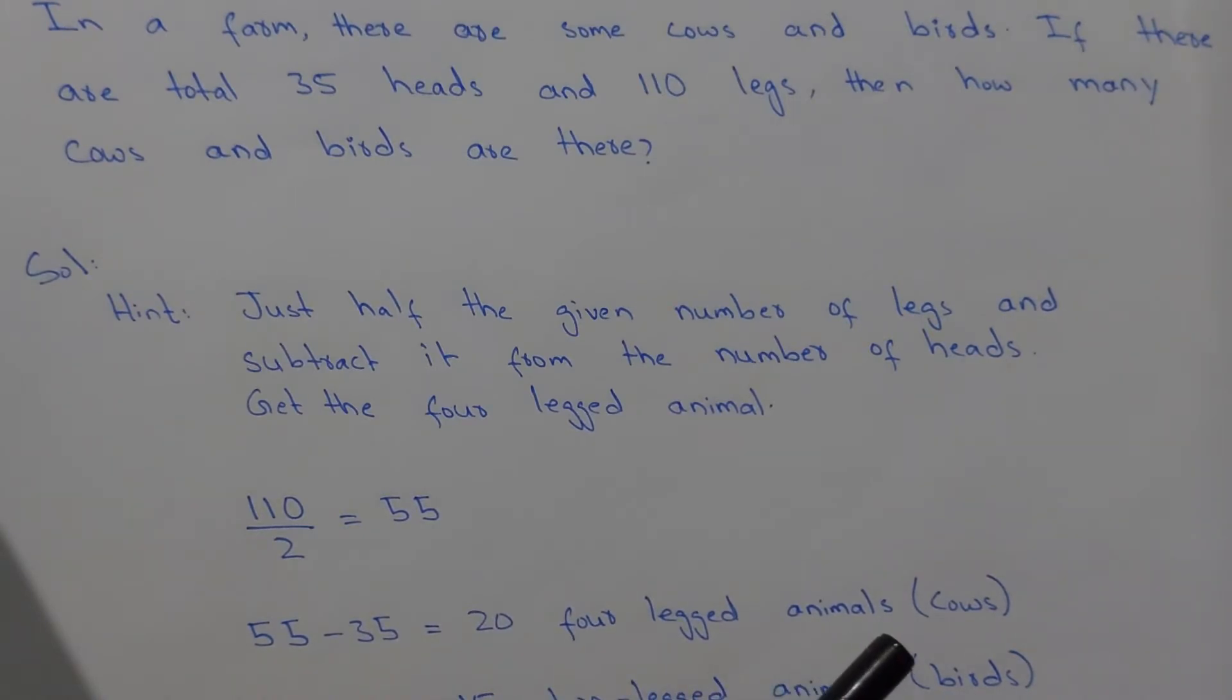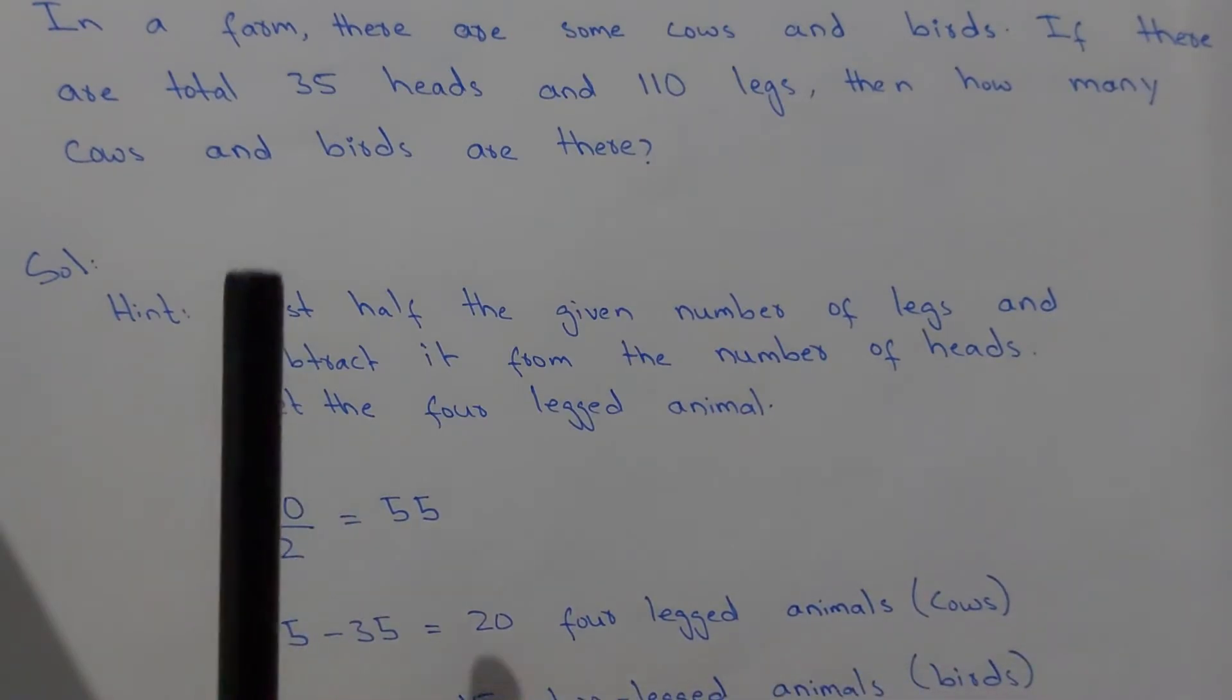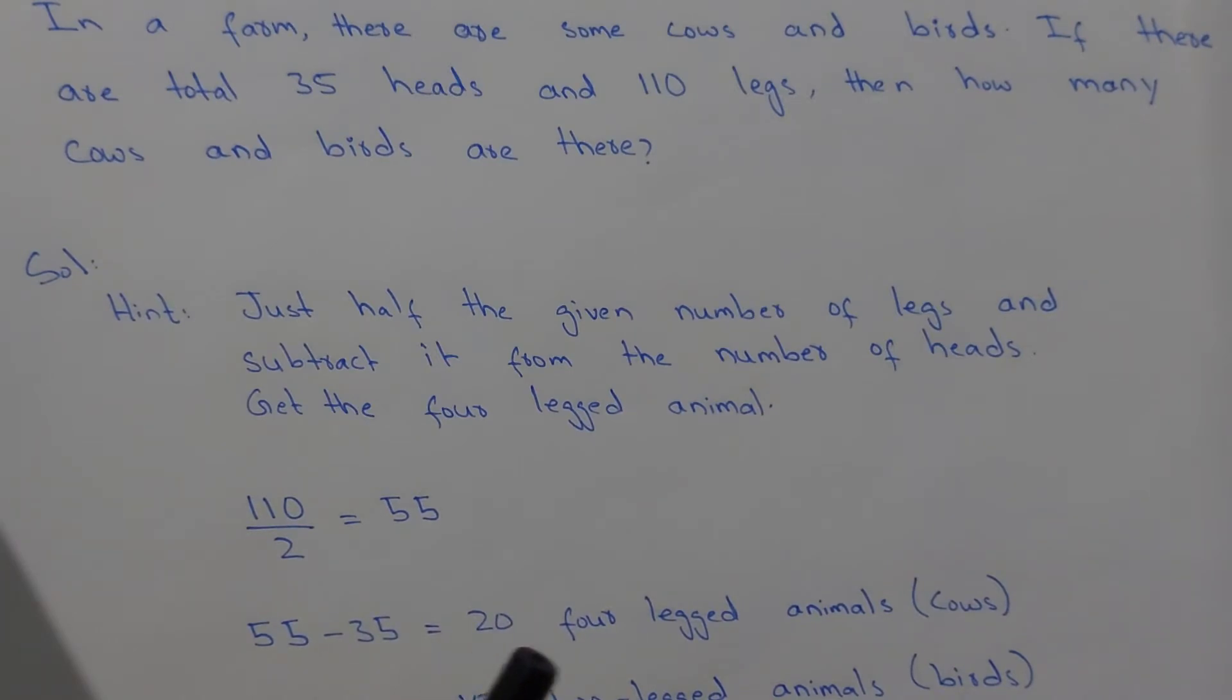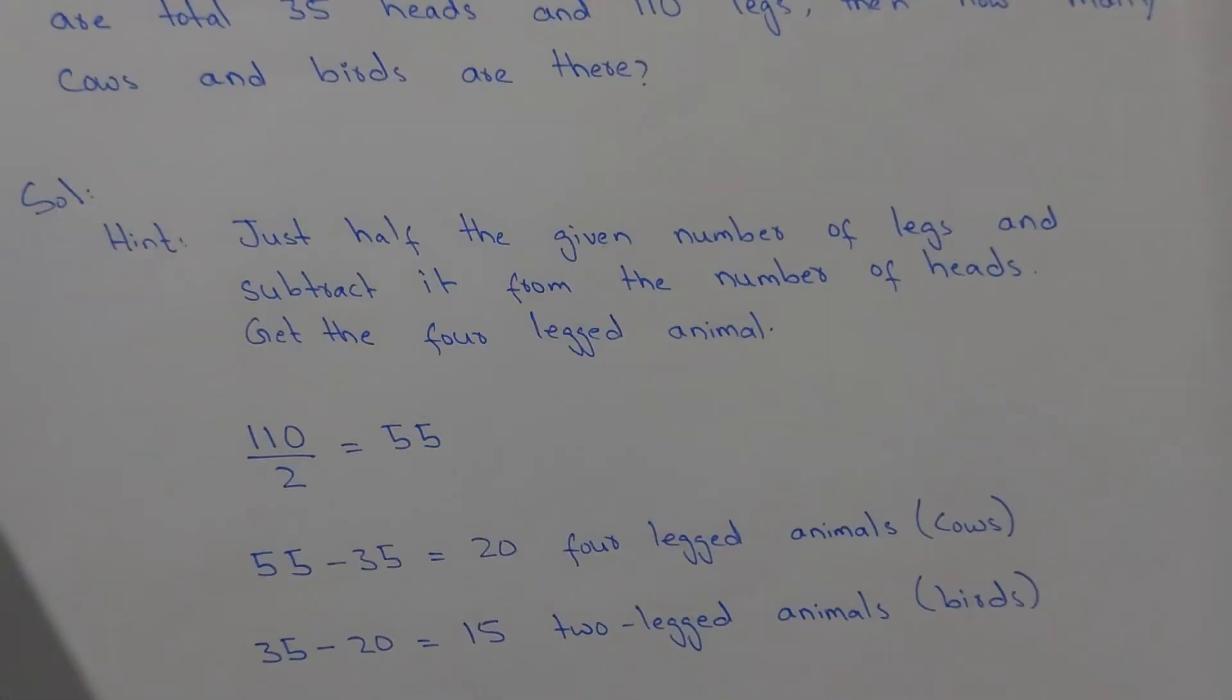Now if the number of heads are 35, minus the 20 cows, then we are left with 15 heads. It means 15 animals. 35 minus 20 equals 15 two-legged animals, it means birds.